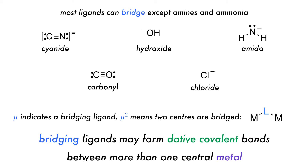Bridging is denoted using the Greek letter mu, with a superscript number indicating how many metal centers the ligand bridges.